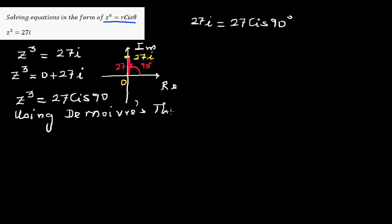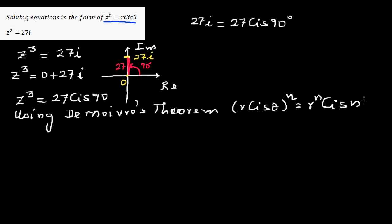De Moivre's theorem states that R cis theta raised to the power n equals R to the power n cis n theta. You raise the modulus by n and multiply the argument by n.